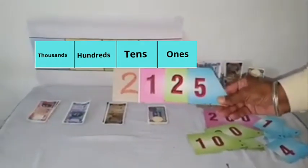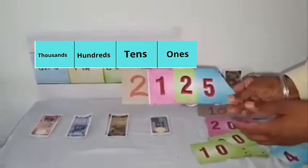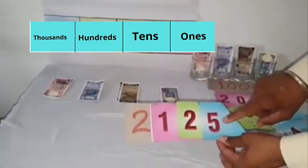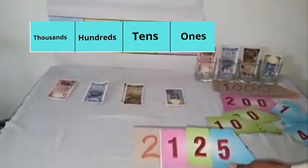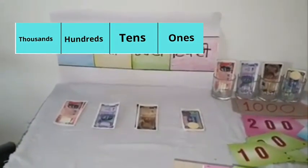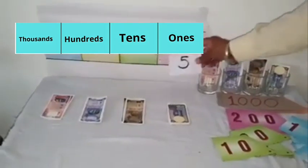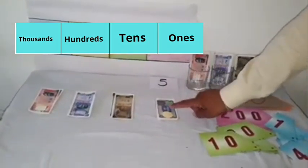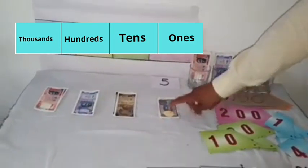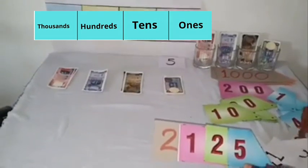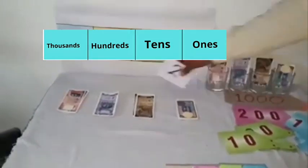The digit at ones place is 5, so we put digit 5 at ones place. Here it is. Yes, 5 ones. Now, you can see we have 5 notes of 1 rupee and the value is 5 rupees. At tens place, we have digit 2, so we will use 2 at tens place and 2 notes of tens are here.